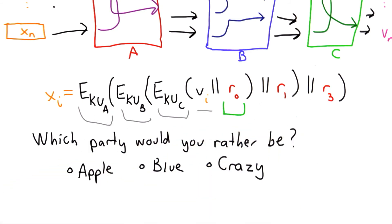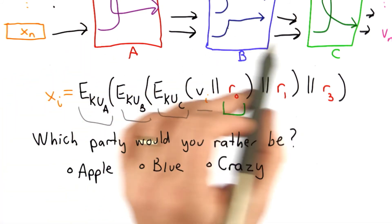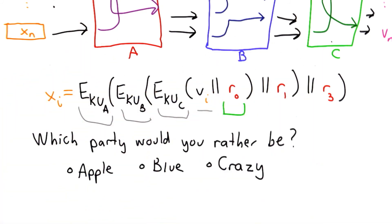So if we use this protocol, which of the three parties — Apple, Blue, or Crazy — would you rather be?